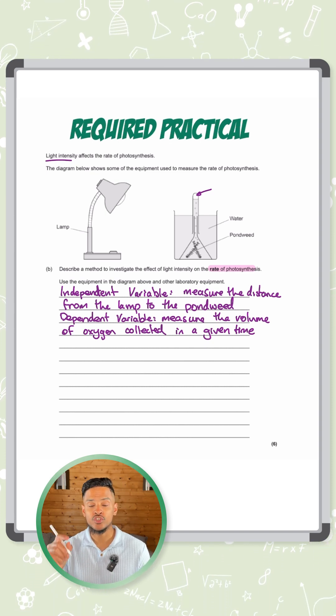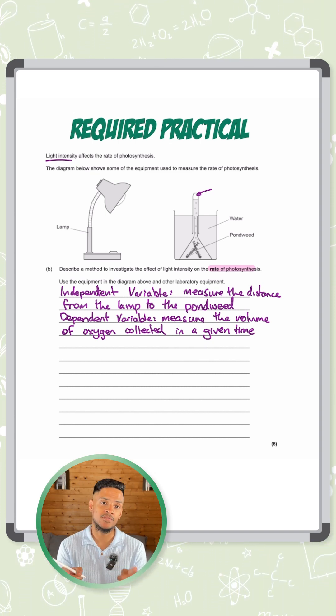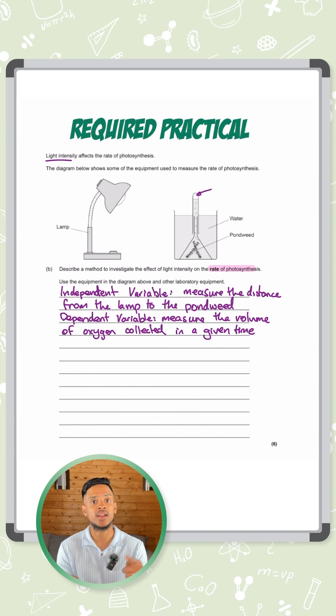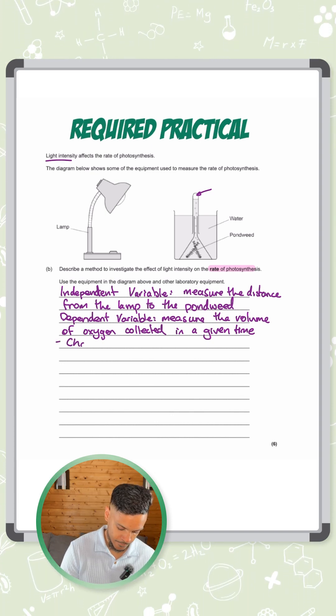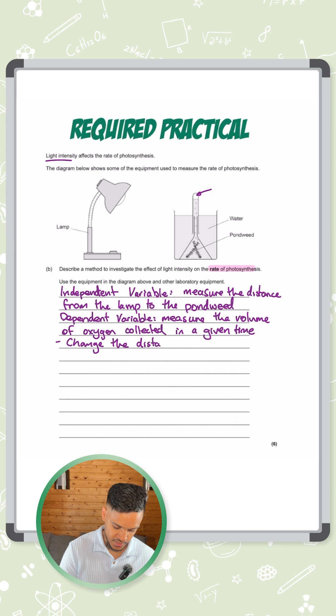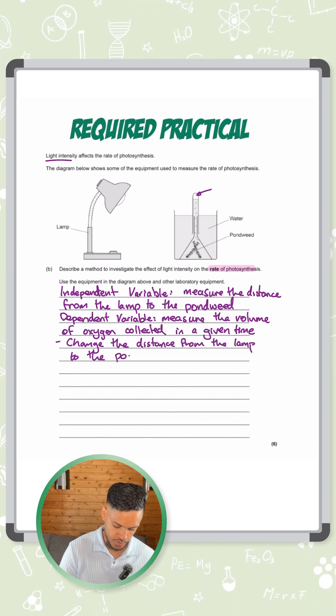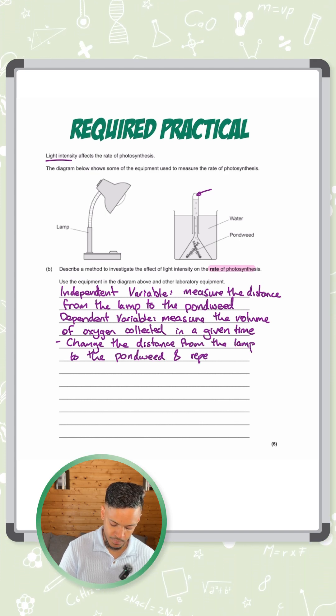Once you've done that you move the distance slightly further and repeat, then slightly further then repeat. So we need to mention that as well. We'll say change the distance from the lamp to the pondweed and repeat.